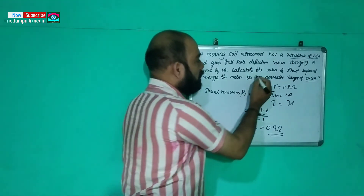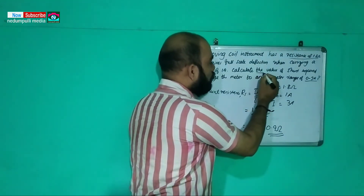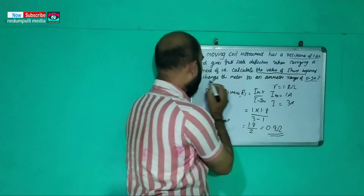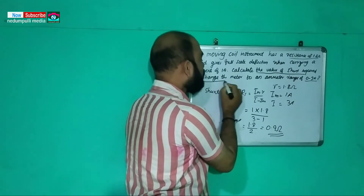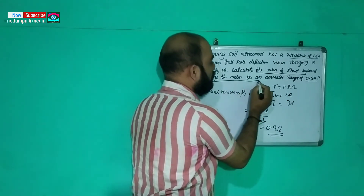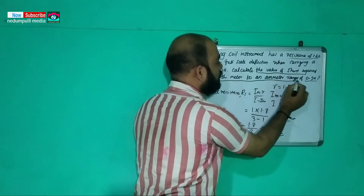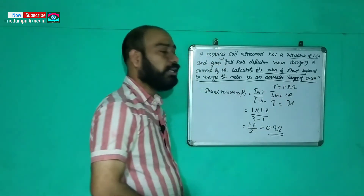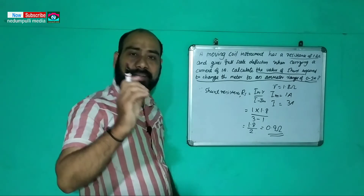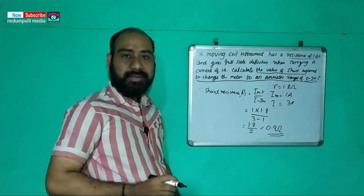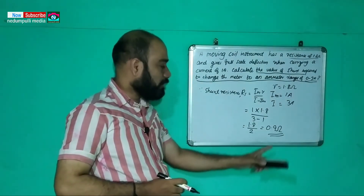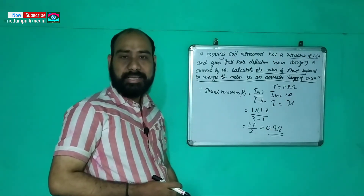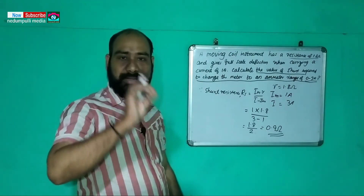The value of shunt required to change the meter to an ammeter range of 0 to 3 ampere is 0.9 ohms.